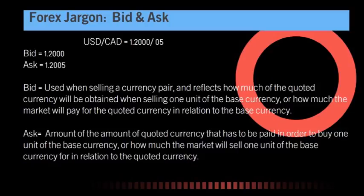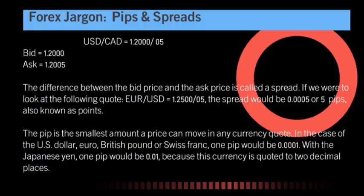Whichever currency is quoted first is known as the base currency, and the currency quoted first in a currency pair is always the one in which the transaction is being conducted — either you buy or sell the base currency. Depending on what currency you want to use to buy or sell the base with, you refer to the corresponding currency pair, otherwise known as the spot exchange rate, to determine the price. The difference between the bid price and the ask price is called the spread. For example, looking at the EUR/USD: 1.2500 divided by 0.03, that spread would be 0.0003, or 3 pips.